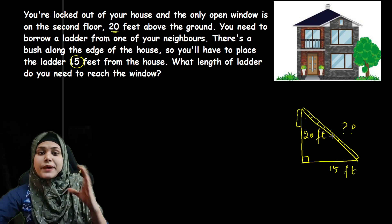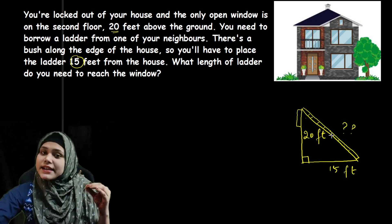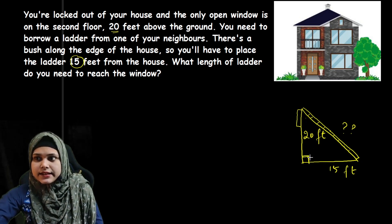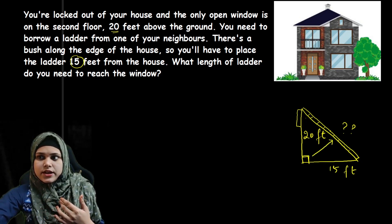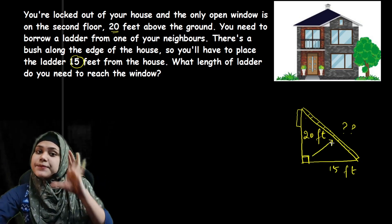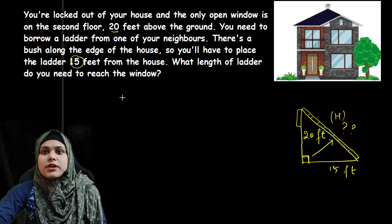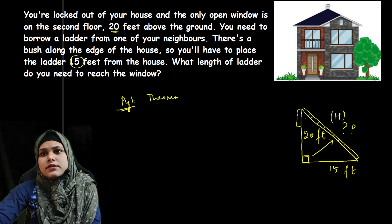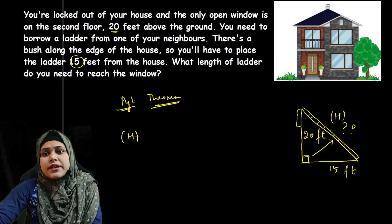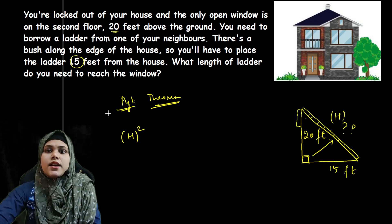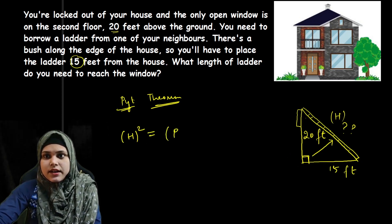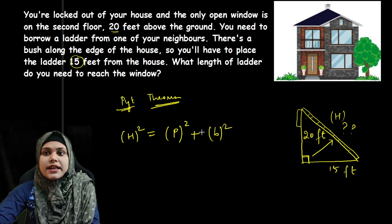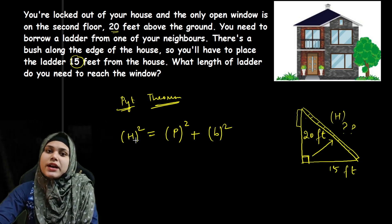The best way to find the third side is to use the Pythagoras theorem, which only applies to right angle triangles. The side opposite the 90-degree angle is the longest side — we call it the hypotenuse. Pythagoras theorem states: hypotenuse squared equals perpendicular squared plus base squared.